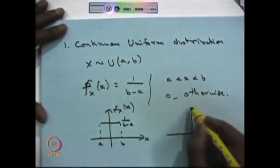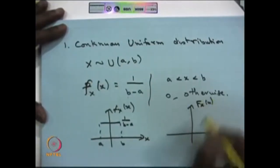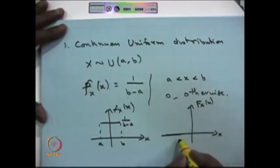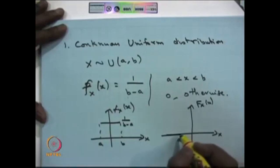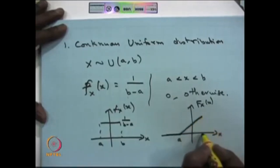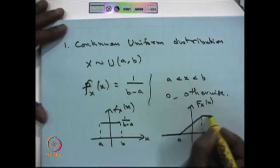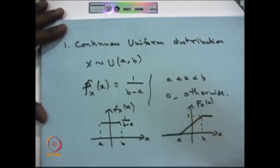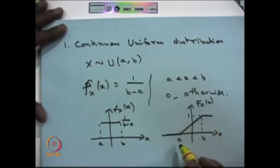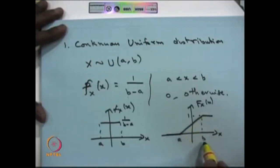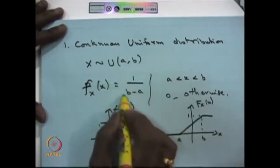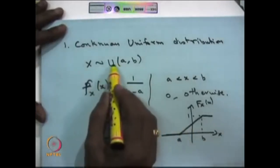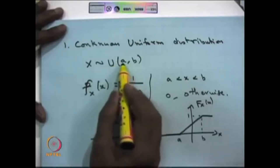Looking at the CDF of this random variable: up to a it is 0, after a it increases linearly, and at b it reaches 1. So if any random variable's CDF increases linearly from 0 to 1 over an interval a to b, you can identify it as a continuous uniform distribution between a and b.